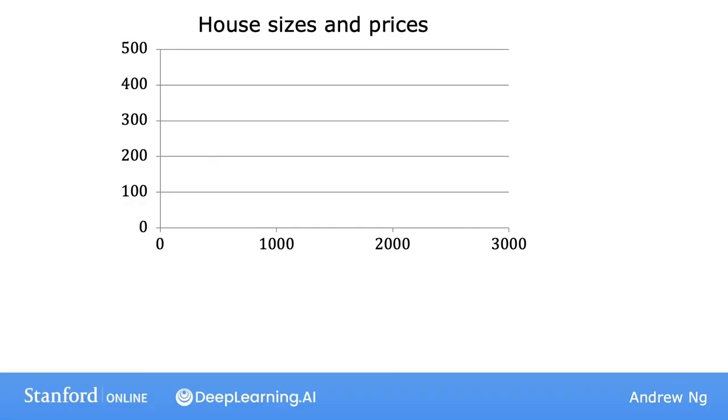Let's start with a problem that you can address using linear regression. Say you want to predict the price of a house based on the size of a house. This is the example we've seen earlier this week. We're going to use a dataset on house sizes and prices from Portland, a city in the United States.